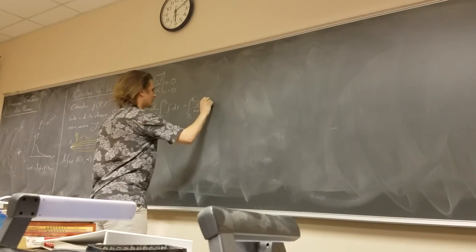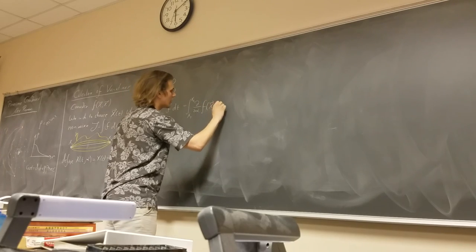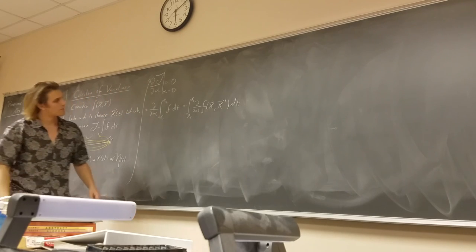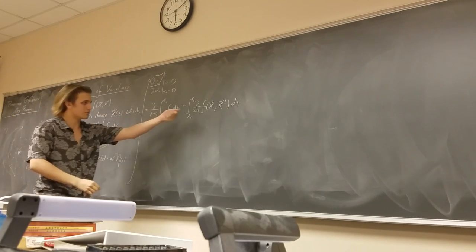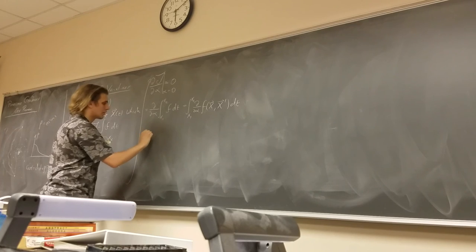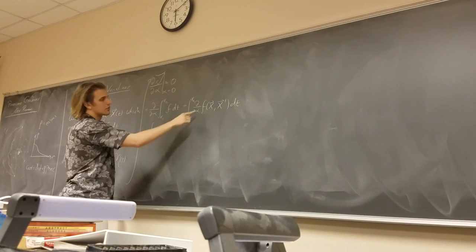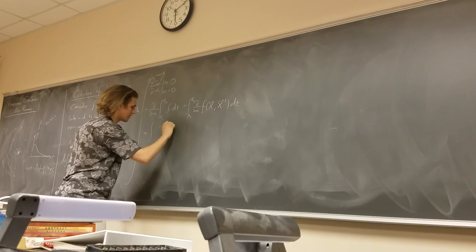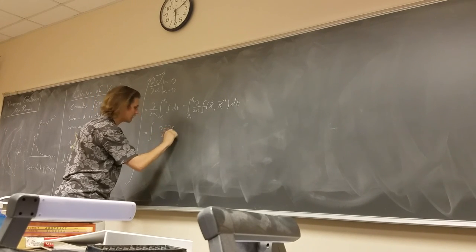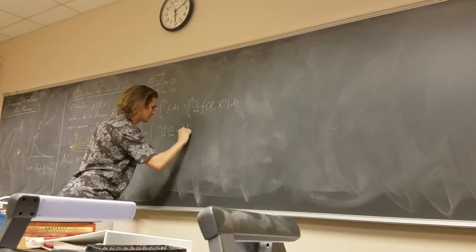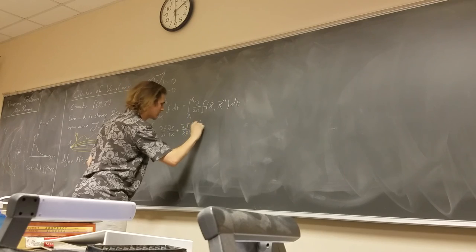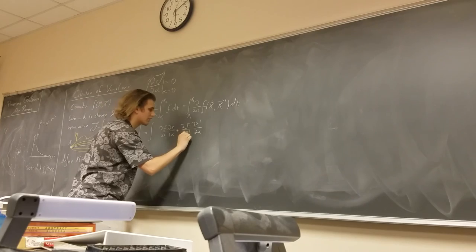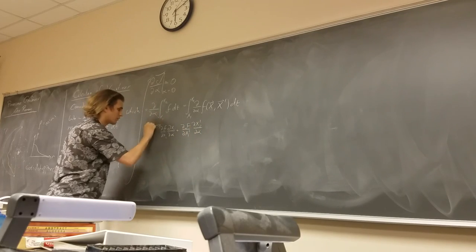What is f a function of? We said it's our position and the derivative of our position with respect to time. Now we are going to chain rule this. This becomes the integral of: how does f change with respect to x, times how does x change with respect to alpha, plus how does f change with respect to x prime, times how does x prime change with respect to alpha. And it's a vector, so we'll index these and sum over them.